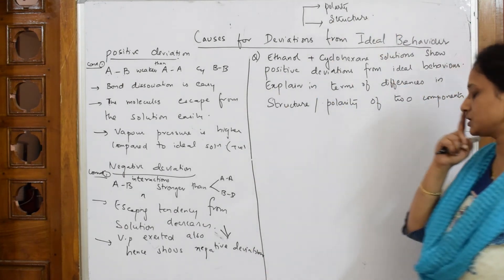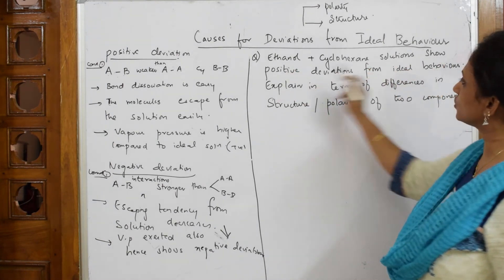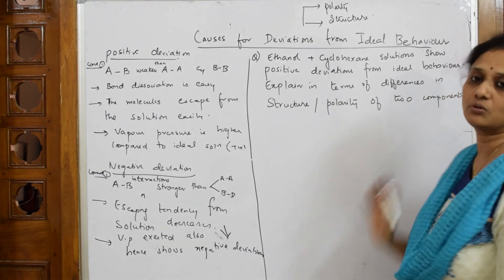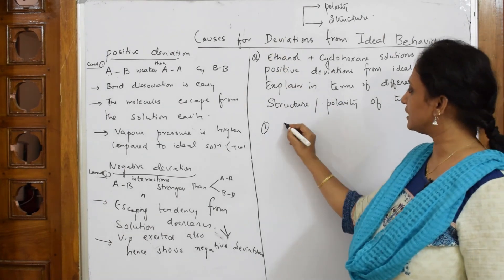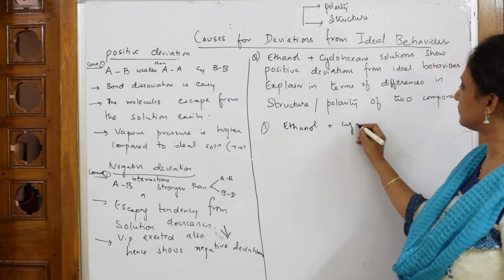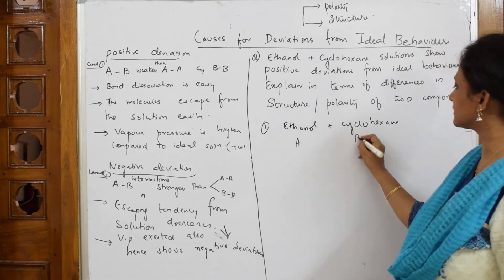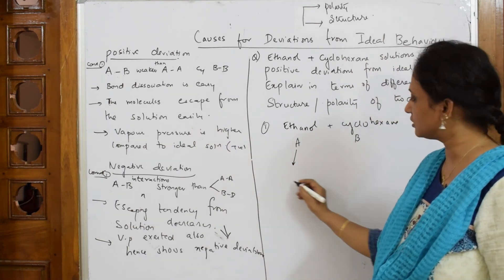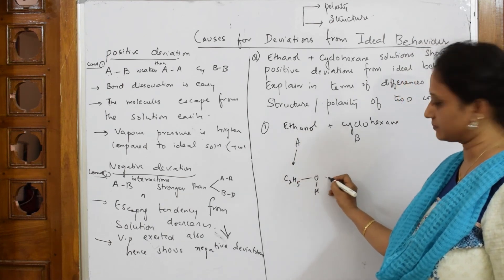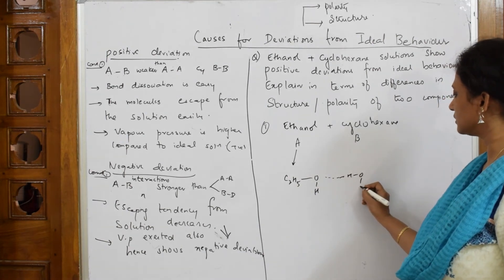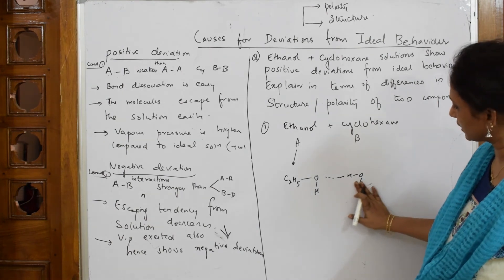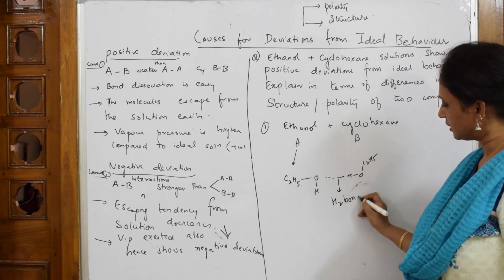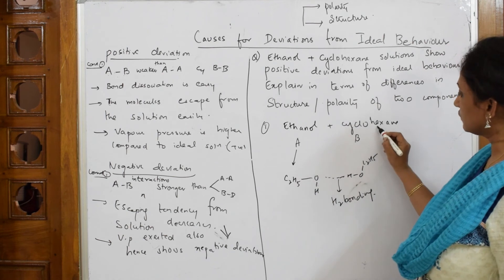Let us solve a question: if ethanol and cyclohexane solutions show positive deviation from the ideal solution, explain in terms of differences in structure and polarity of the two components. Ethanol is component A, cyclohexane is component B. They are showing positive deviation, which means compulsorily the interaction should be weaker. What is ethanol? Ethanol shows hydrogen bonding. So ethanol-ethanol interactions involve strong hydrogen bonding. But when cyclohexane tries to approach ethanol, it will break the hydrogen bonding.